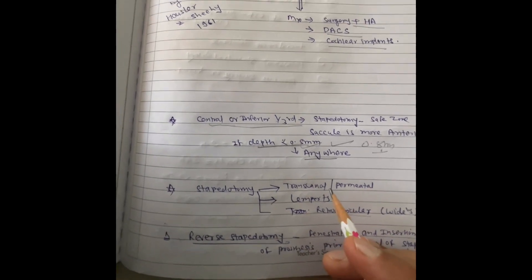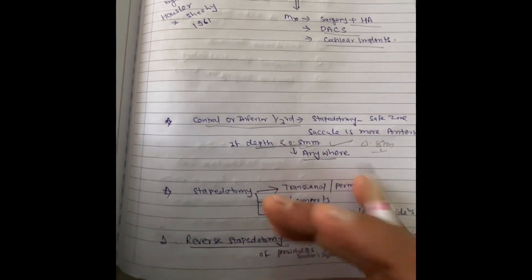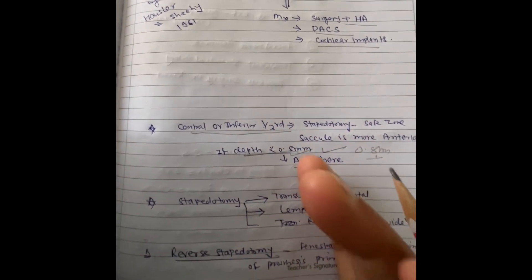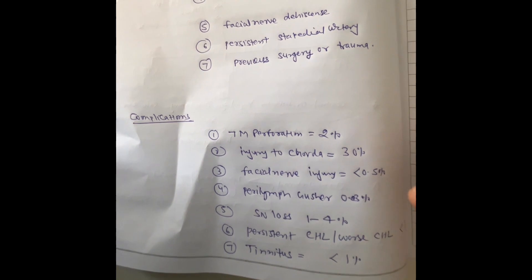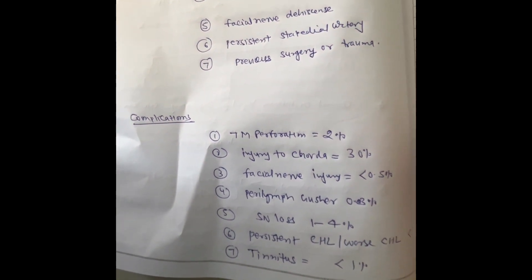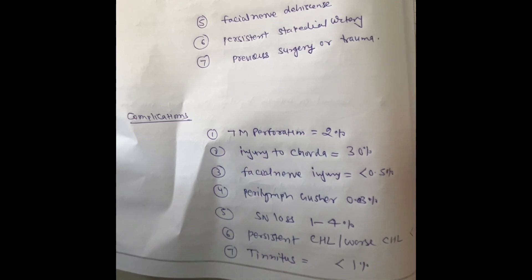Reverse stapedectomy is the procedure in which fenestration and piston placement are performed prior to removal of the stapes superstructure. Prerequisites of stapedectomy include checking for oval and round window obliteration, cochlear otosclerosis, fixation of malleus and incus intraoperatively, risk of perilymph gusher (checked on CT), facial nerve dehiscence (checked on CT), persistent stapedial artery (checked on CT), and previous surgery or trauma (ruled out by history).